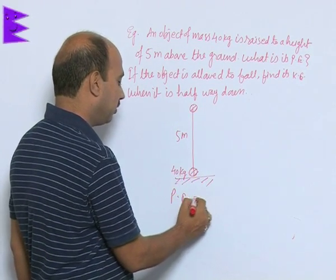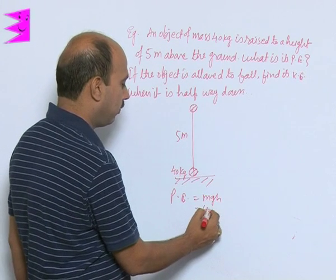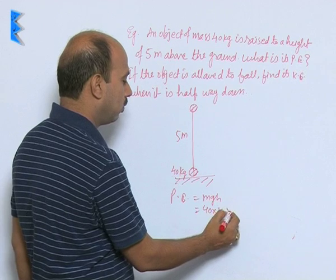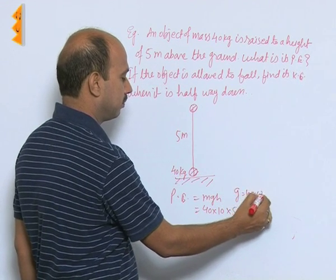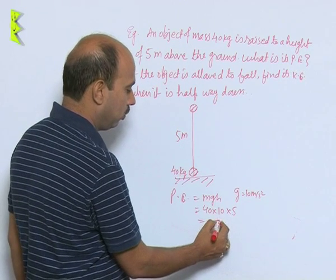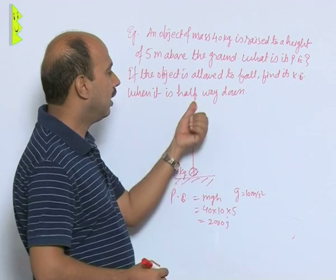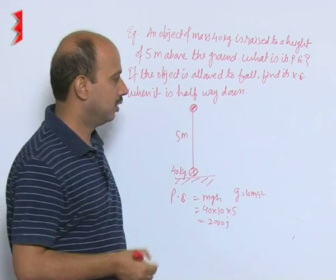We can write potential energy is equal to mgh. So this is 40 into 10 into 5. I have taken g is equal to 10. So we can write here 2000 joule. Total energy at this highest point is 2000 joule. It is called potential energy.